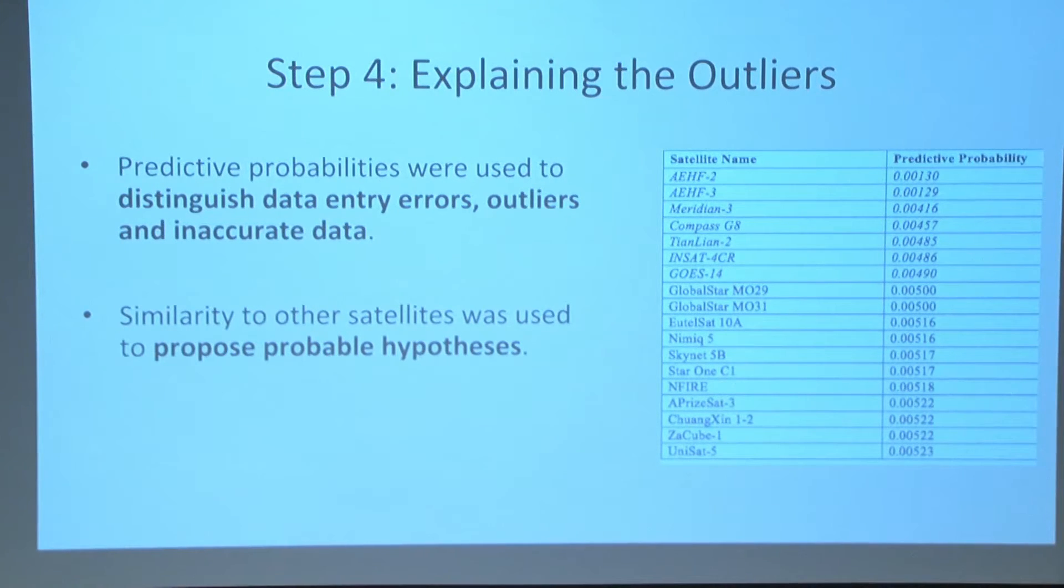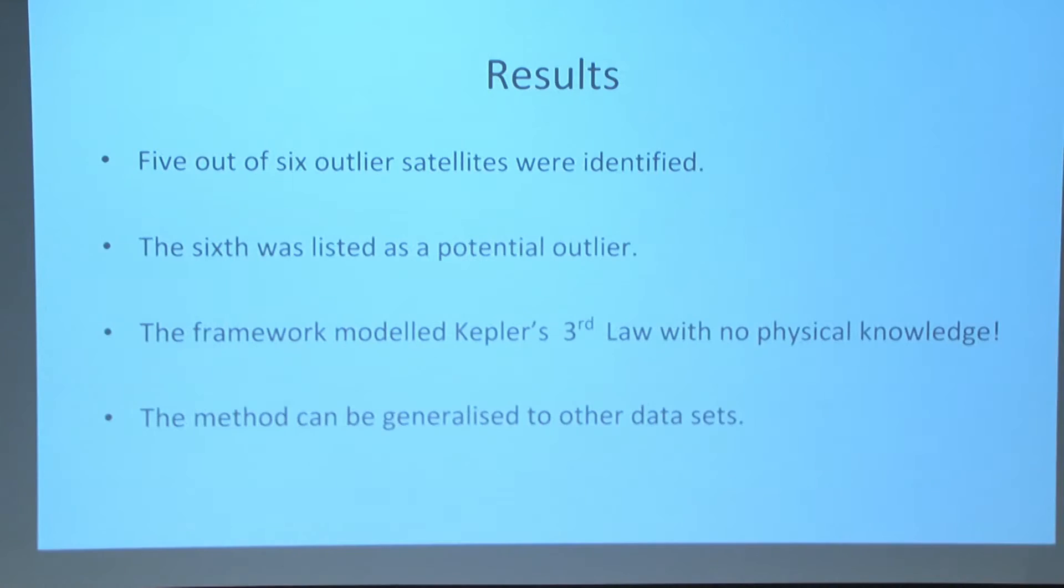And finally, I computed the similarity to different other satellites in order to propose probable hypotheses, some explanations for this. And what I was able to find was that I detected five out of the six outlier orbits from manual research using those combination of the two models. And the sixth was a potential outlier. And the framework was able to actually figure out what Kepler's law was without having any deterministic knowledge. And this method can actually be generalized to find outliers in other high-dimensional data sets.